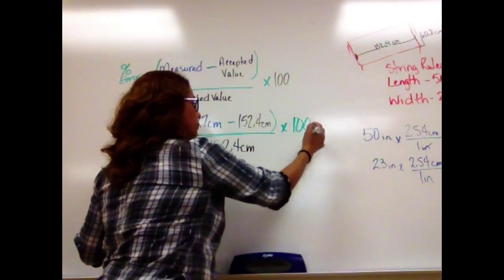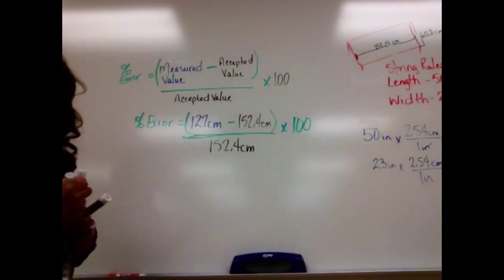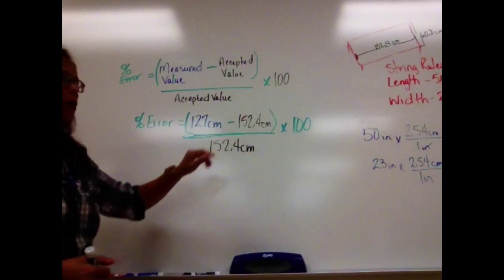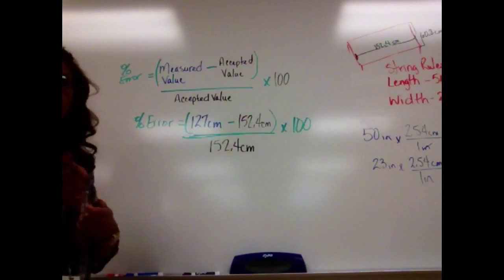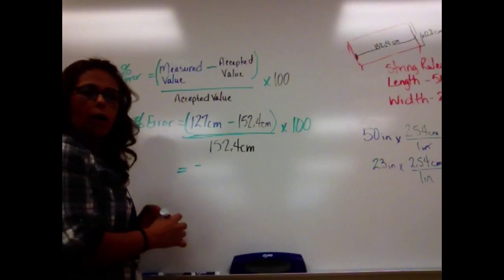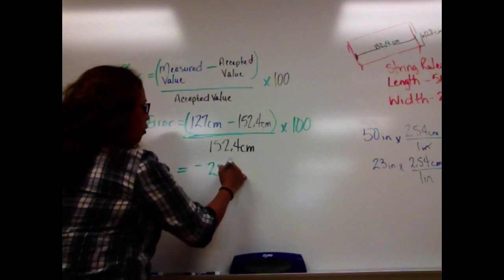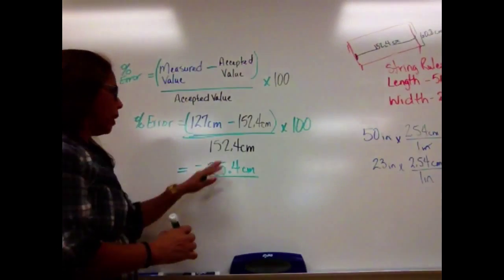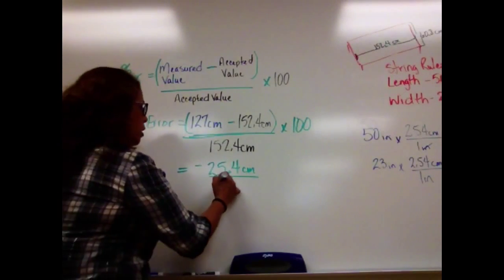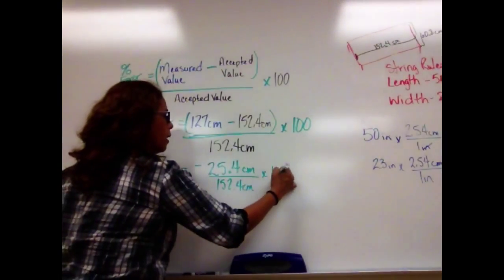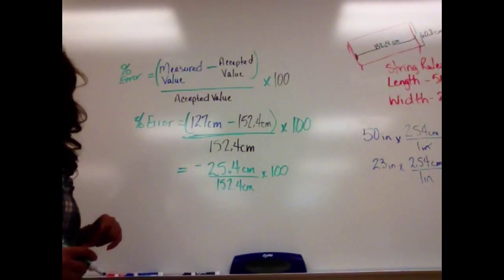So if I do the math, you're going to see that the top value is actually a negative value because this is smaller than that one. So on the top here, I would end up with negative 25.4 centimeters divided by this value right here, which is 152.4 centimeters times 100. So as I keep on doing my steps, once I divide these two, I end up with 0.6166 repeated times 100.